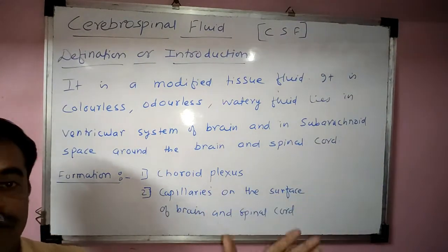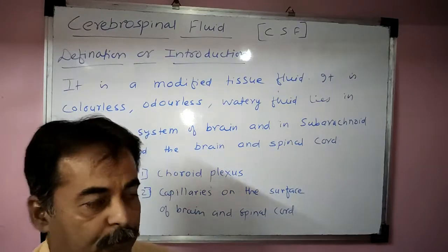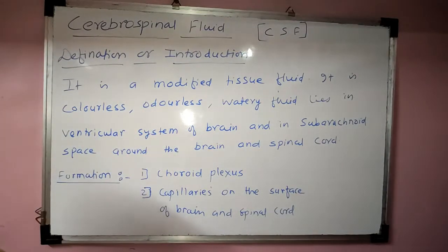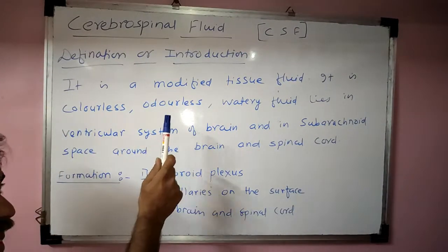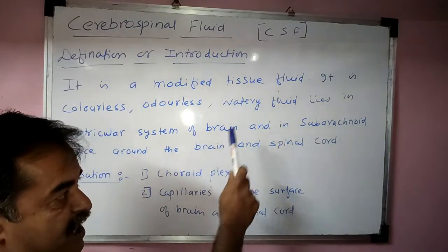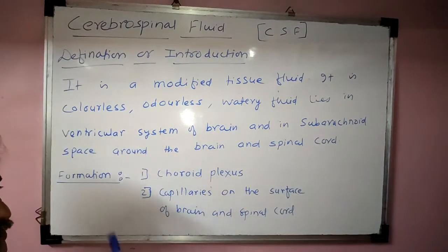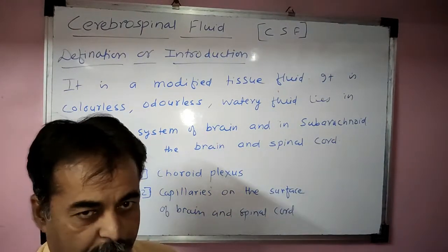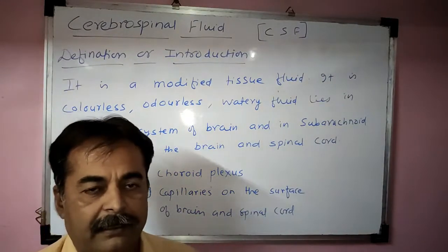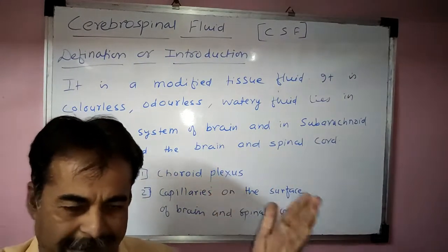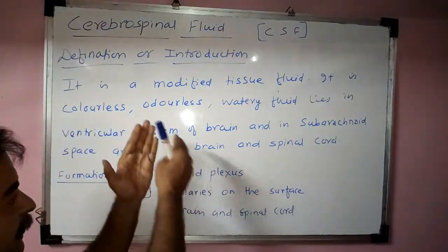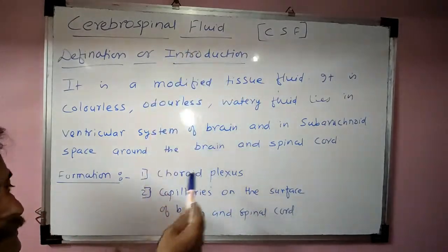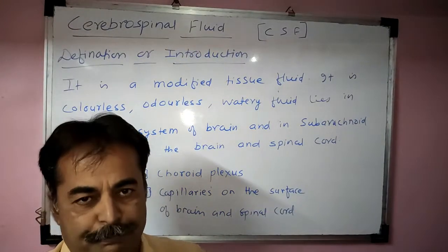As we have seen the ventricular system of brain in the previous video, there are two lateral ventricles, a third ventricle and a fourth ventricle. The fluid that lies in this ventricular cavity is called cerebrospinal fluid.